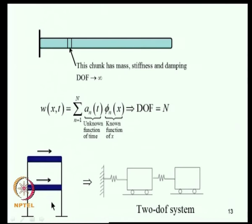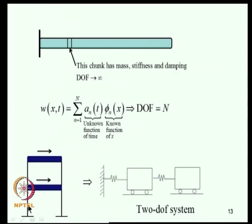For a 2-story building frame, if the slab mass is very large compared to column mass and the slabs are infinitely rigid in their own plane, the behavior can be approximated by a 2-DOF model. The two masses correspond to the floor masses, the springs represent column stiffness contributions, and the mass displacements correspond to floor displacements.